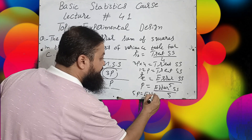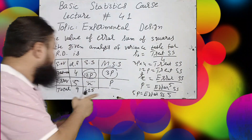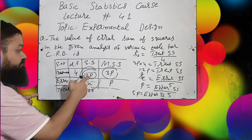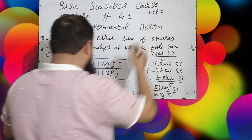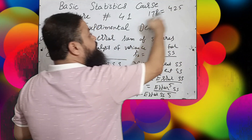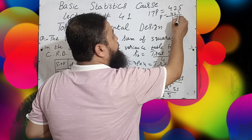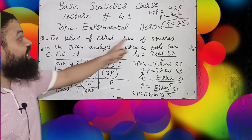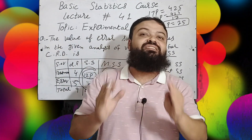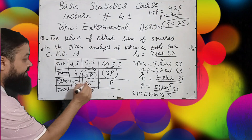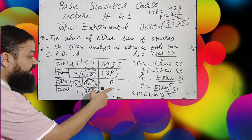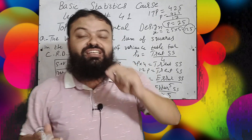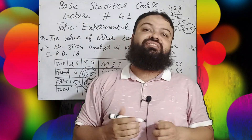Using the ANOVA table concept: total sum of squares equals treatment sum of squares plus error sum of squares, which is 12p plus 5p equals 17p. Setting 17p equal to 425 and dividing by 17 gives p equals 25. Our target is the error sum of squares, which equals 5p equals 5 times 25 equals 125. So 125 is the correct answer — a very important question for statistics exams.